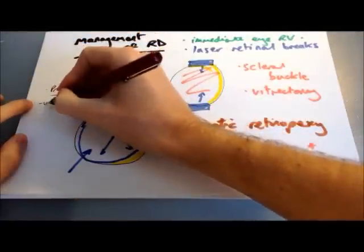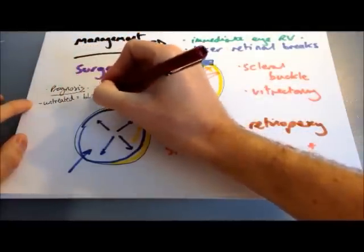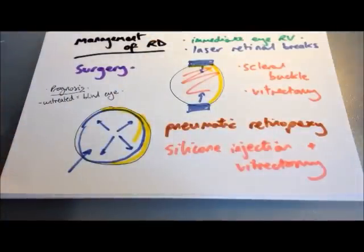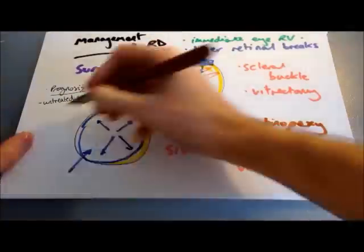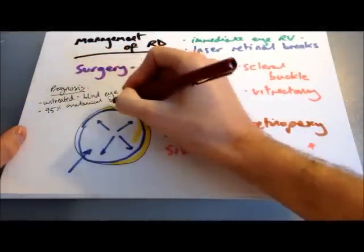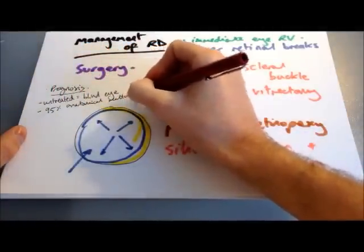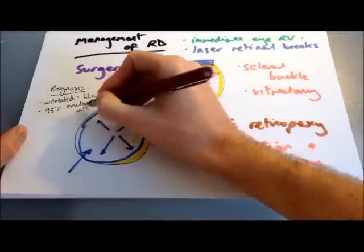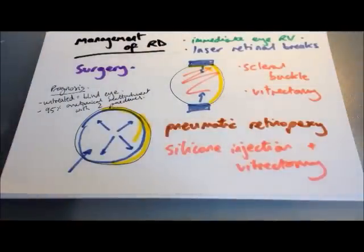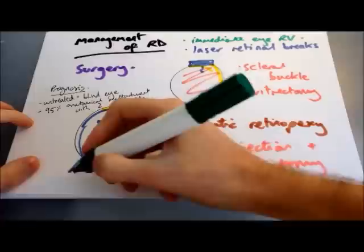Moving on to prognosis — untreated, this usually leads to a blind eye. But if treated, you've got an excellent outcome with around 80% of people having anatomical reattachment after one operation and 95% with two procedures. A macula-on retinal detachment has a better prognosis than a macula-off for central visual acuity.